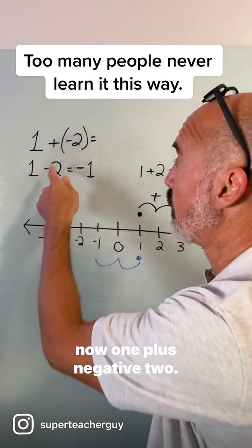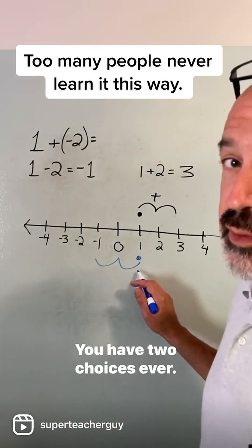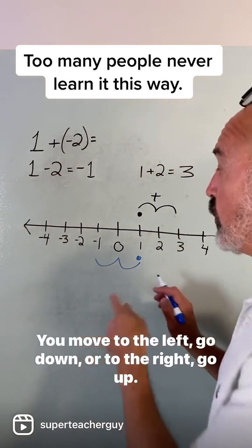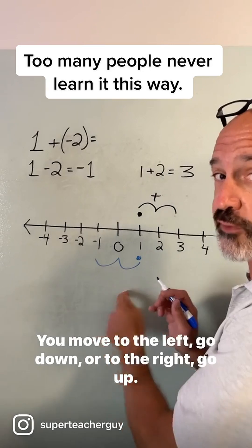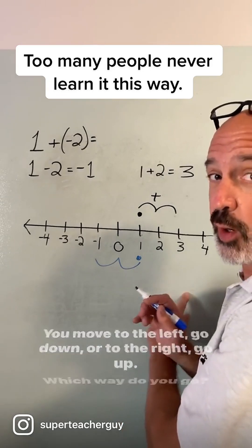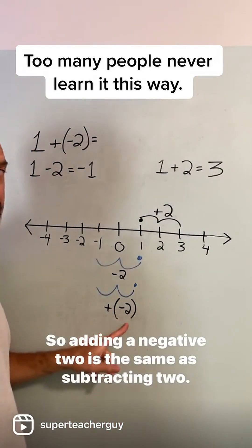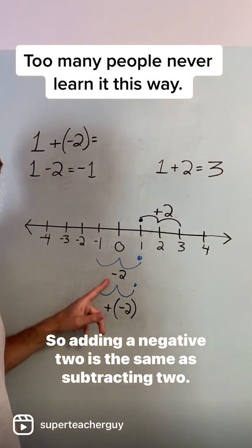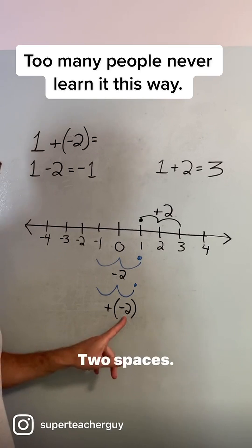So now one plus negative two. You still start at one. You have two choices ever: you move to the left and go down, or to the right and go up. Which way do you go? Adding a negative two is the same as subtracting two. You start at one and you go to the left two spaces.